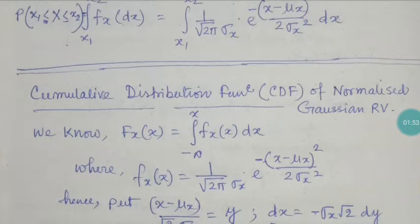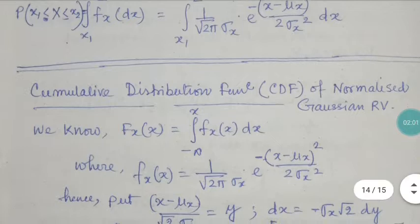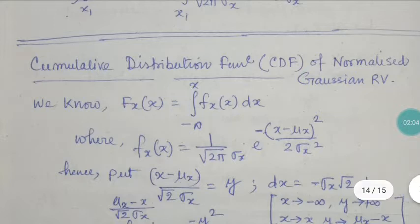For the normalized Gaussian random variable, f(x) ranges from minus infinity to plus infinity. When finding the CDF, the upper limit changes from plus infinity to a finite value x. So F_x(x) = integral from minus infinity to x of (1 / (√(2π) σ_x)) × e^(-(x - μ_x)² / (2σ_x²)) dx.